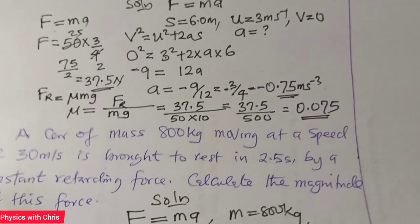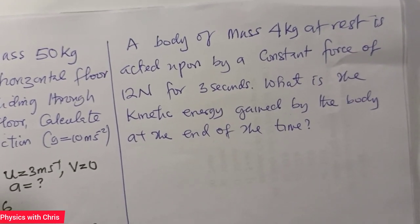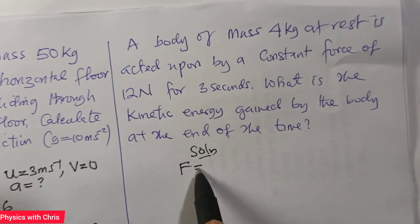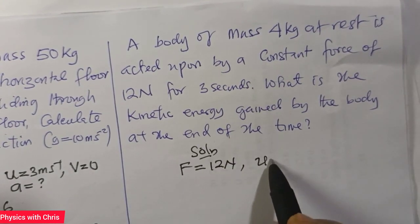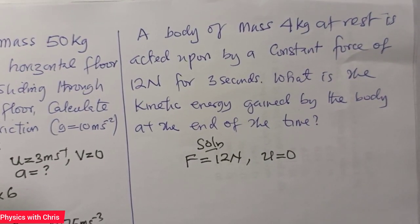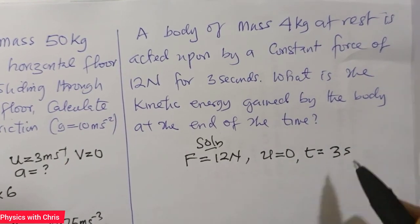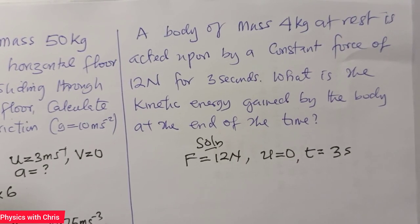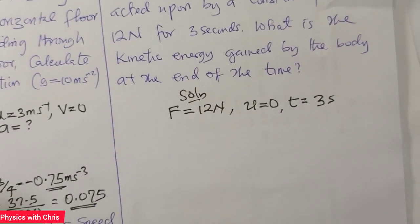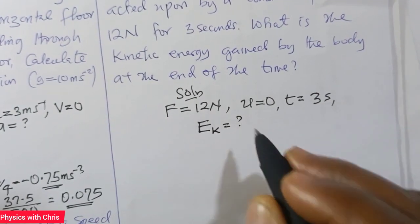Let's take a look at one more question. A body of mass 4 kg at rest is acted upon by a constant force of 12 Newtons for 3 seconds. The body starts from rest, meaning the initial speed is zero. Whenever a body starts its motion from rest in kinematics, the initial velocity is taken as zero. We need to find the kinetic energy gained by the body at the end of that 3 seconds.